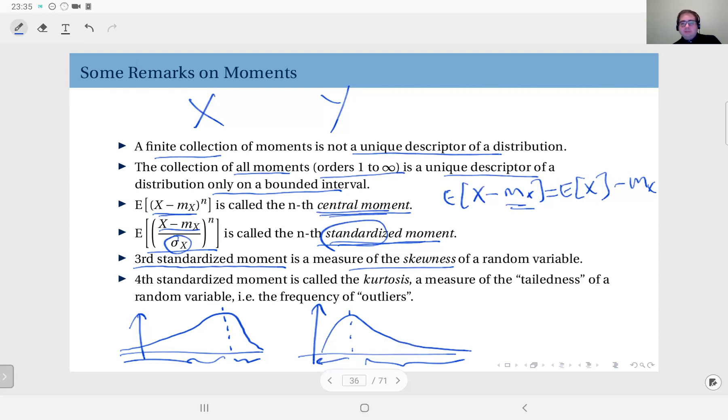But skewness does not work on every kind of distribution. Sometimes you have distributions with multiple modes, something like this, for instance. In such distribution skewness is not that meaningful, but still with unimodal distributions like these ones on the left, it's meaningful in some applications.